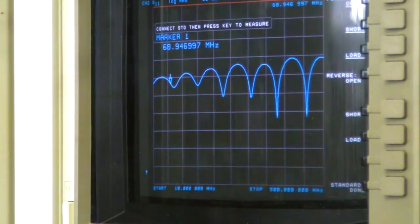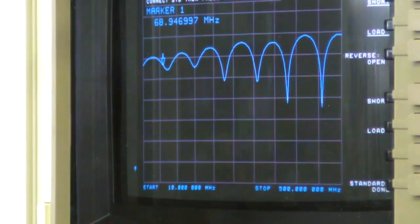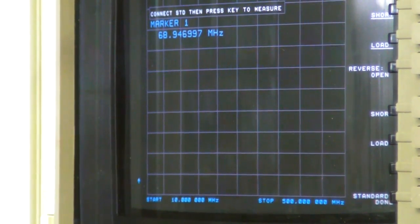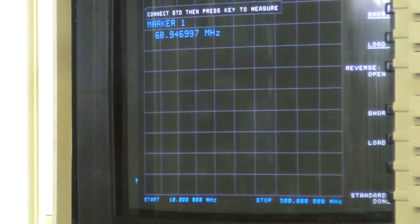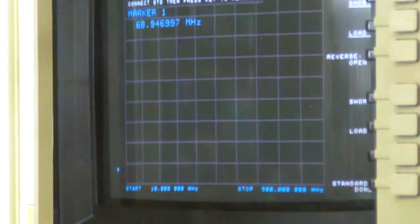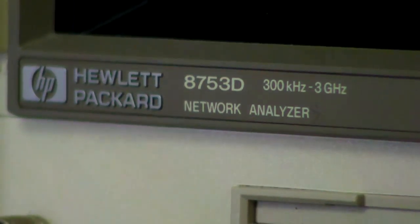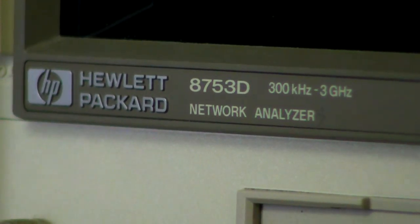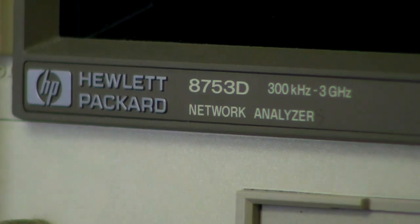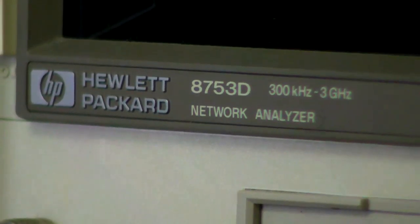What is the instrument? It's an 8753D with an external test set. They make another version of this with an internal test set, but then you can't get at all the test signals. There's occasionally reasons to want to get at the stimulus signal and the reference signal in the A and the B channel. All the switches are in an external box.